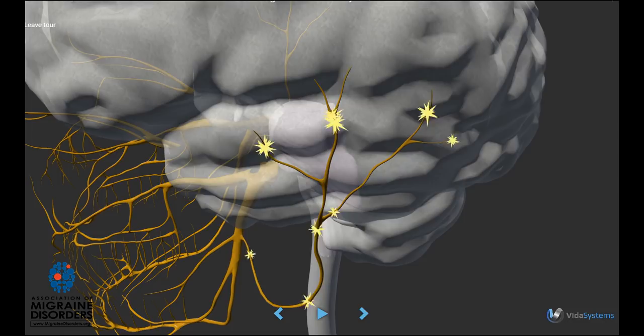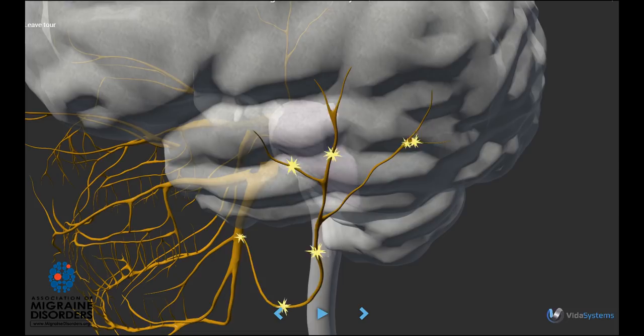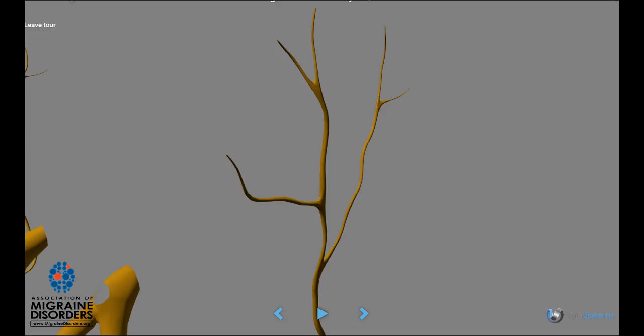One of these pathways follows the trigeminal nerves to the dura and its blood vessels. When stimulated, these trigeminal nerves release neurotransmitters in the dura: serotonin, neurokinin A, substance P, glutamate, and calcitonin gene-related protein, CGRP.